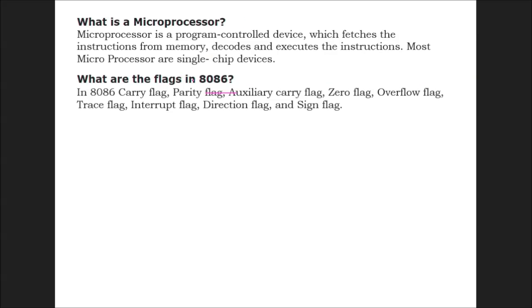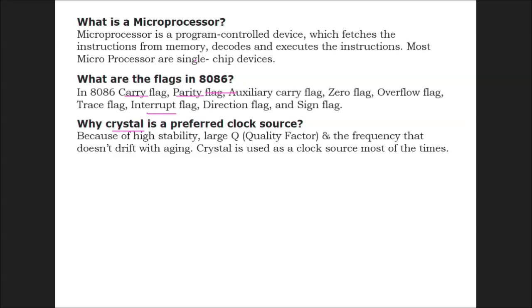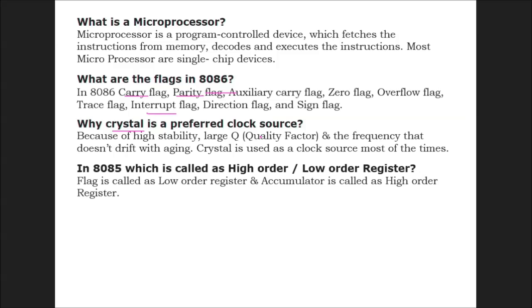What are the flags in 8086? In 8086 we have carry flag, parity flag, auxiliary carry flag, zero flag, overflow flag, trace flag, interrupt flag, direction flag, and sign flag. Why is crystal a preferred clock source? Because of high stability, low Q (quality factor), and the frequency doesn't drift with aging. In 8085, which is called the high order or low order register? Flag is called low order register and accumulator is called high order register.